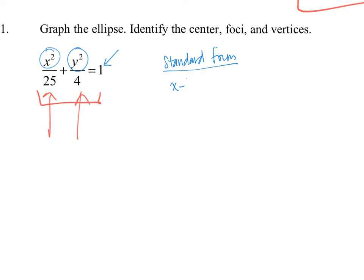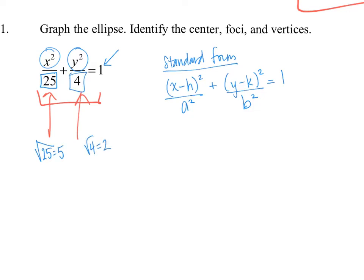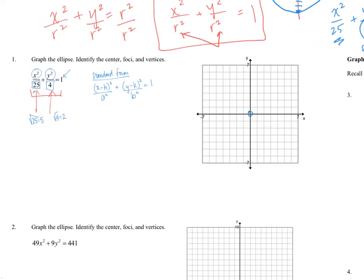For example, x²/25 + y²/4 = 1: the square root of 25 is 5 and the square root of 4 is 2. Starting at center (0, 0), go five units right, five left, two up, and two down to get the four key points of the ellipse. Since 25 > 4, the major axis is horizontal and the ellipse is wider than it is tall.